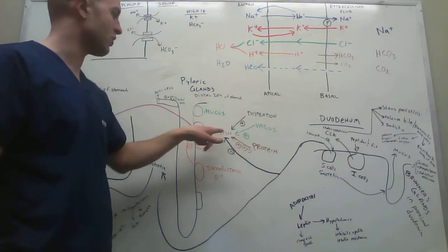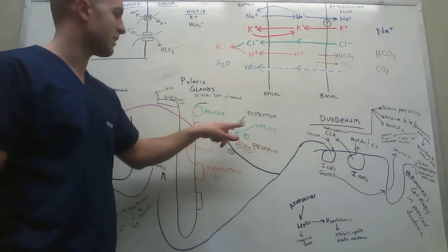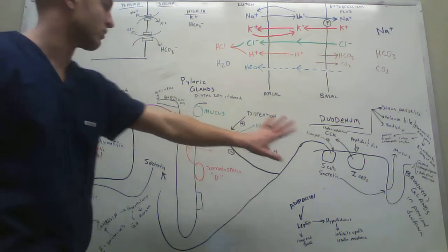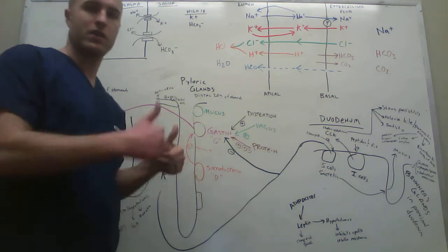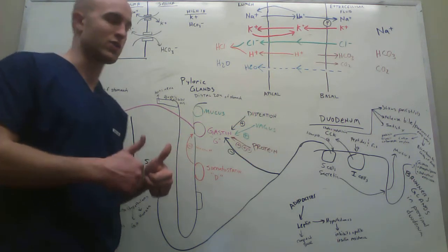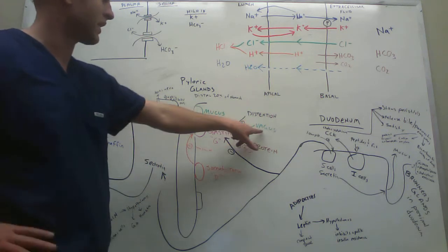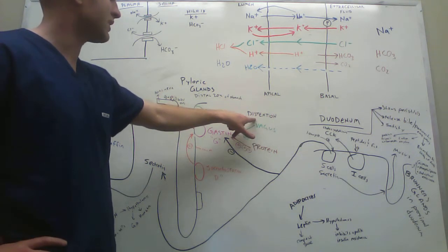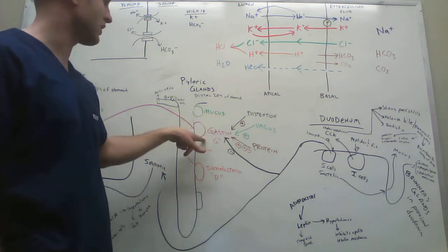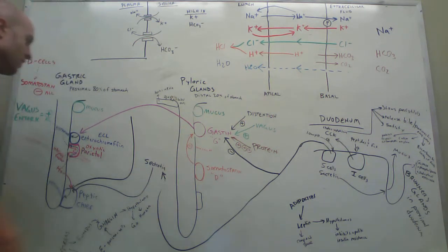Protein's the big one that triggers gastrin cells. But also stimulation from the vagus. Vagus stimulation triggers everything positive. It increases all the stuff here. Also distention, if there's some distention, that'll also cause the release of gastrin.